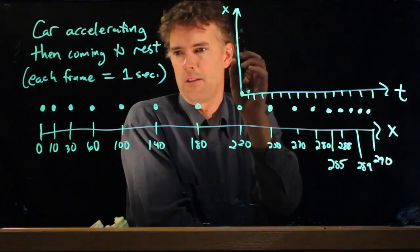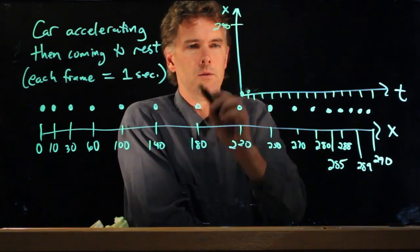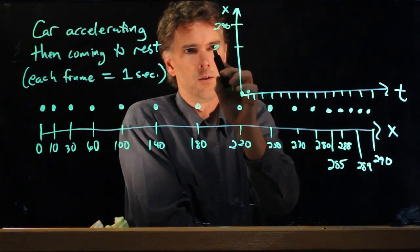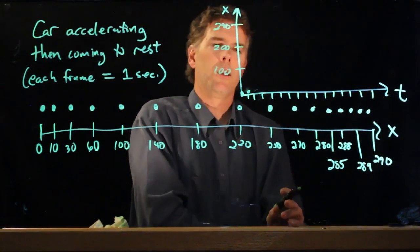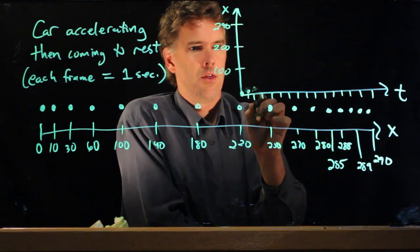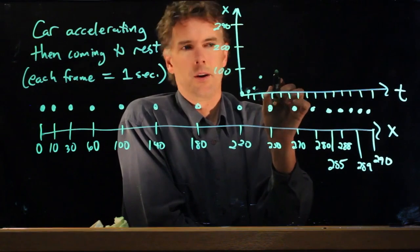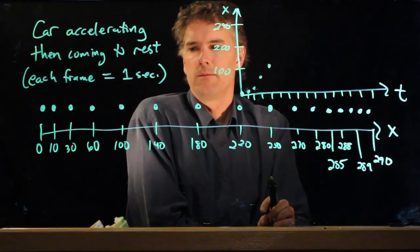Okay. And let's say that this is the ending point, 290. All right. Which means that this is roughly 200. This is 100, something like that. All right. So 10 would be about there. 30 is the next point. 60 is the next point. 100 is at that point right there.